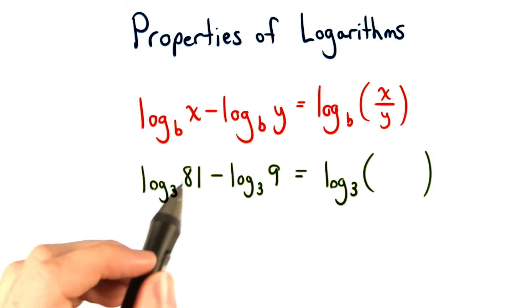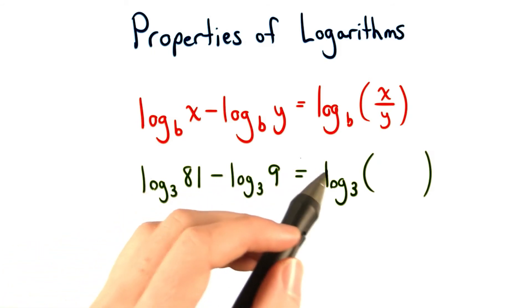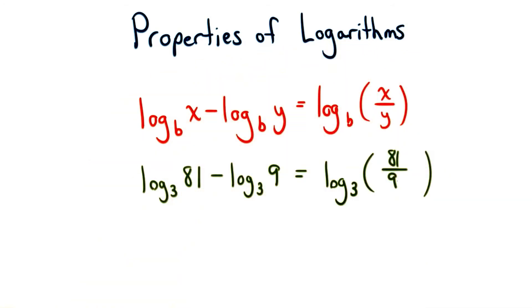For example, the log of base 3 of 81 minus the log of base 3 of 9 would equal the log of base 3 of 81 divided by 9. We simply just divide these two numbers inside of our argument and take the log of it. And let's also be sure that this checks.